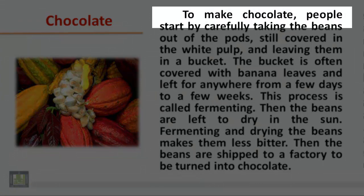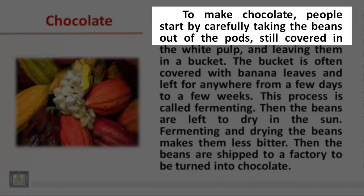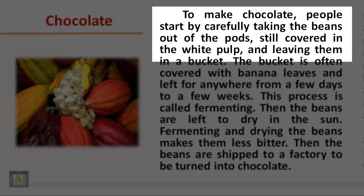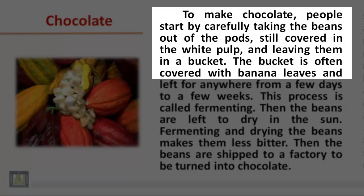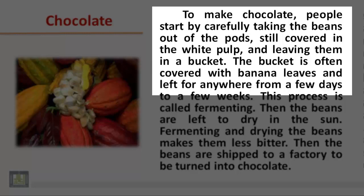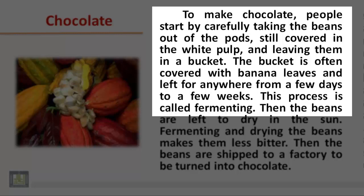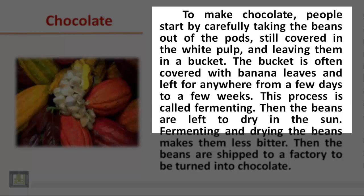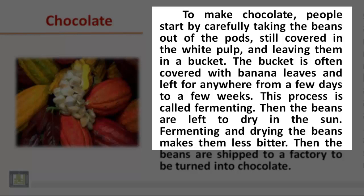To make chocolate, people start by carefully taking the beans out of the pods, still covered in the white pulp, and leaving them in a bucket. The bucket is often covered with banana leaves and left for anywhere from a few days to a few weeks. This process is called fermenting. Then the beans are left to dry in the sun. Fermenting and drying the beans makes them less bitter.